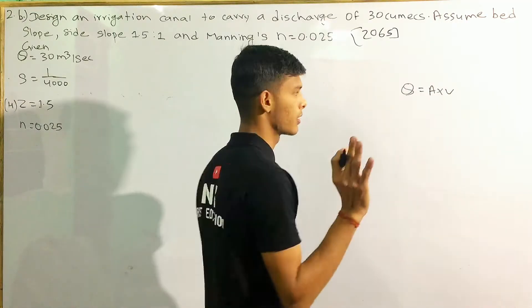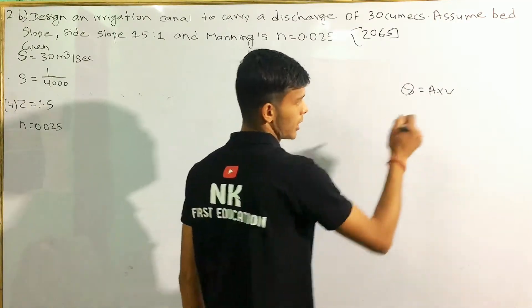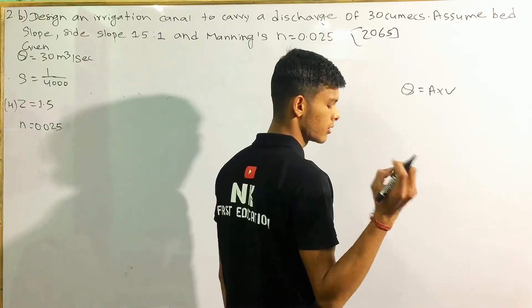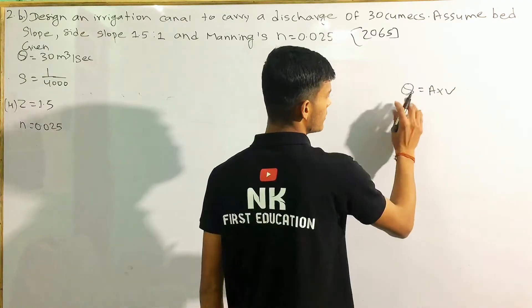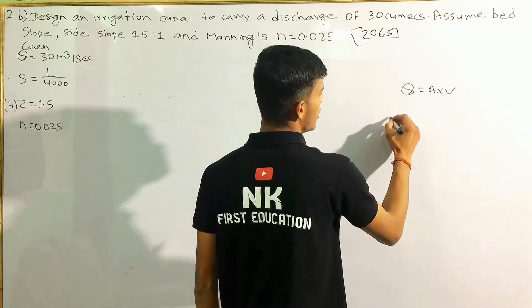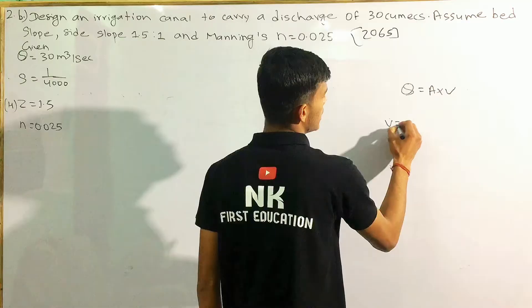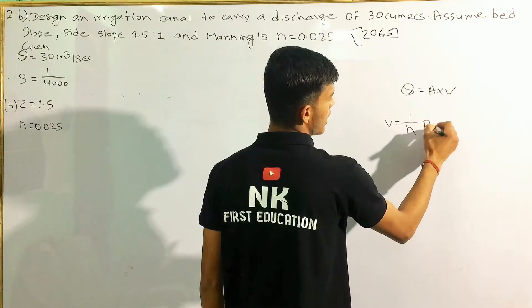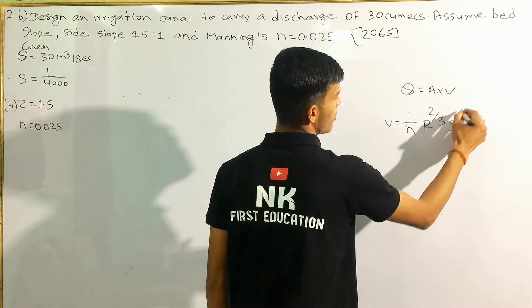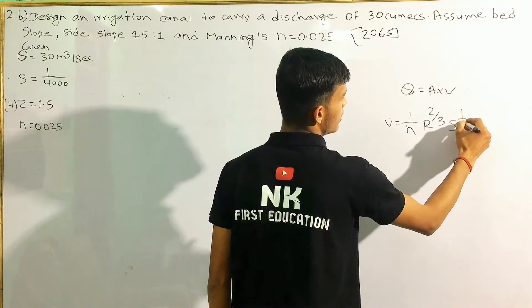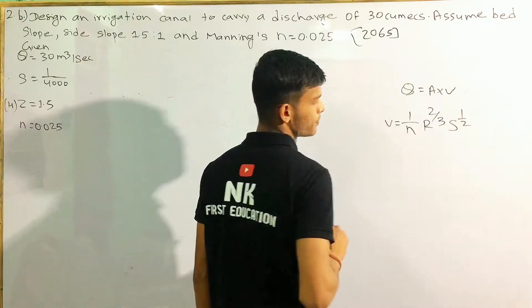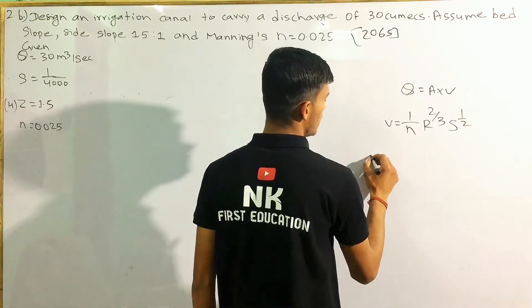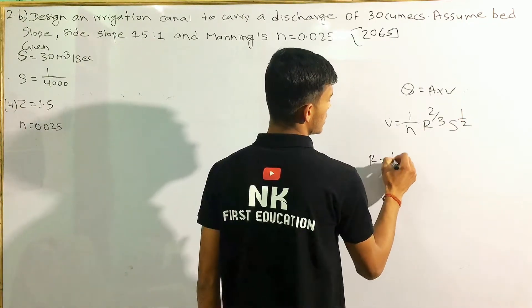The most important formulas are: for velocity, V equals (1/n) × R^(2/3) × S^(1/2). For the area, it can be expressed in terms of B and D.